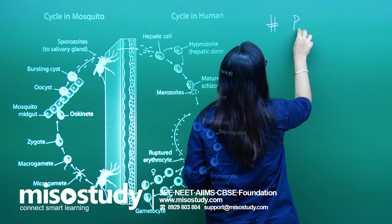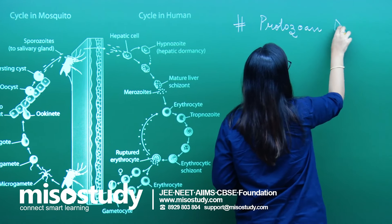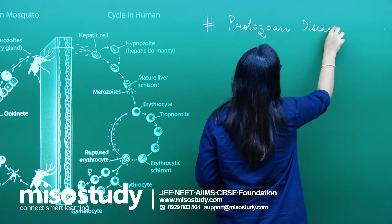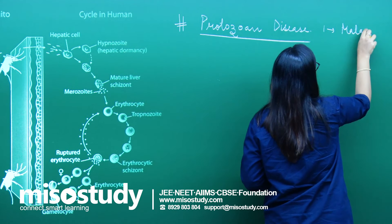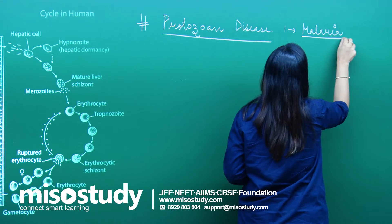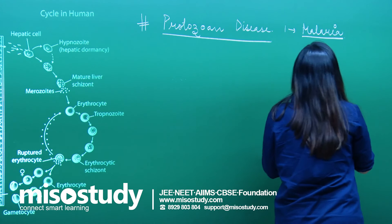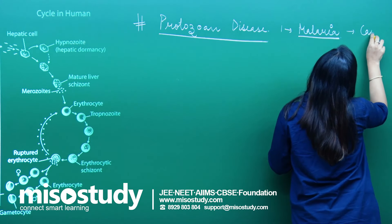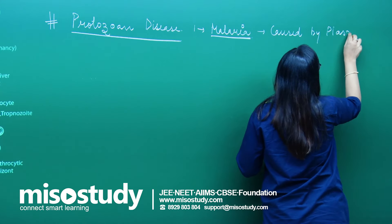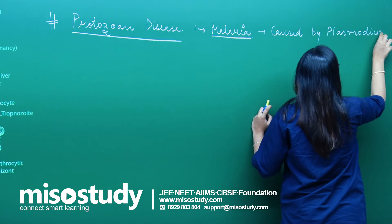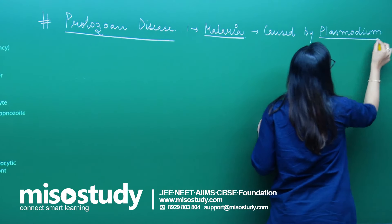We are talking about a protozoan disease, that is malaria. The question arises: who causes malaria? Malaria is caused by plasmodium. Obviously, when we are talking about a protozoan disease, that means this plasmodium is a protozoan.